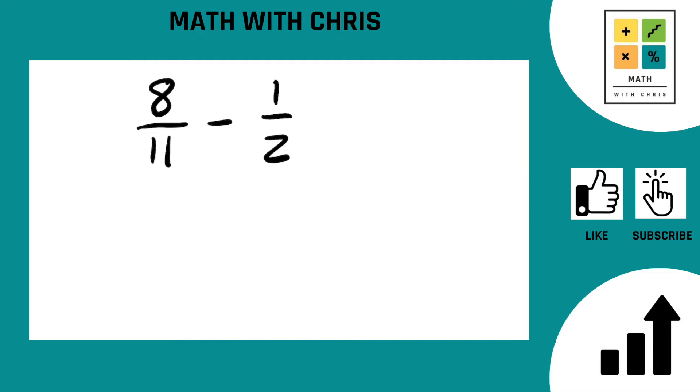And the way we cross multiply is we start in the upper left. That's our 8. Cross them down like that. 8 times 2. Multiply. Cross multiply. 8 times 2 is 16.